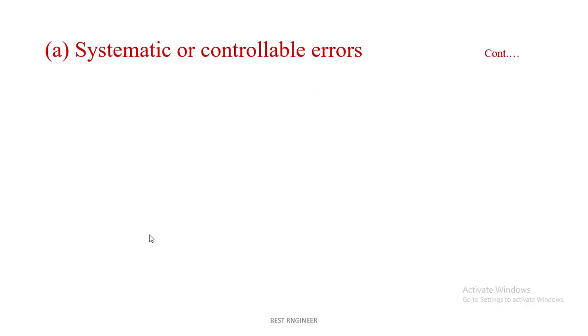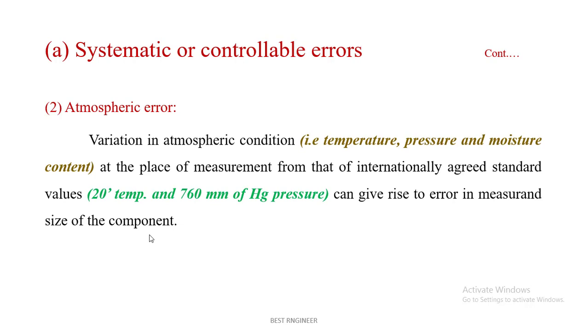The second error in systematic controllable error is atmospheric error. Variation in atmospheric condition, the temperature, pressure, and moisture at a place of measurement from that of internationally agreed standards values - 20 degrees Celsius and 760 mm of Hg pressure should be maintained while measuring the instrument. Suppose we are not maintaining this pressure and temperature, there is a cause for some error. This is called atmospheric error.